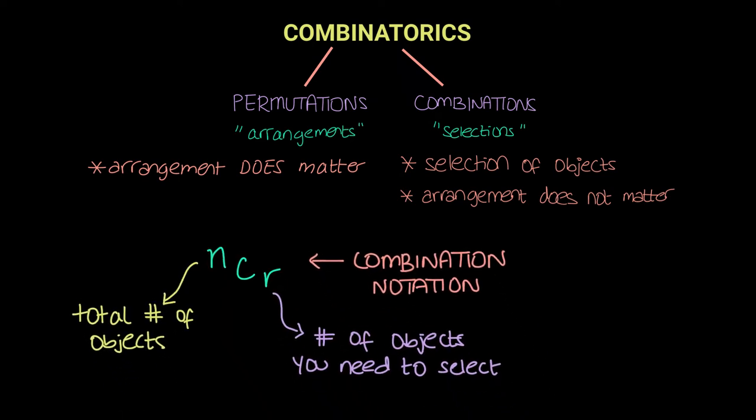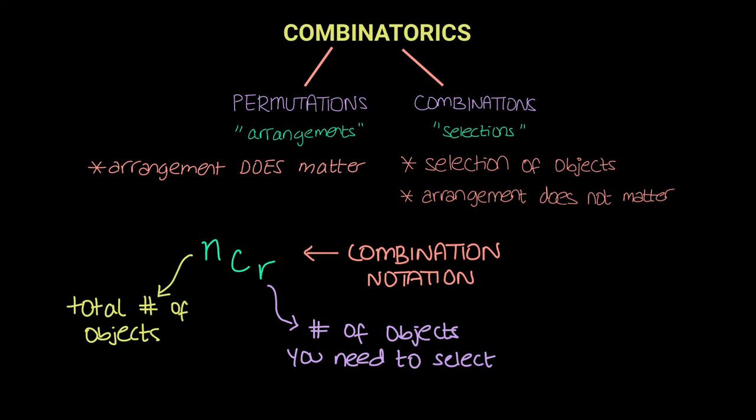Now let's introduce the combination notation. If you look in your calculators, you will have a notation that says NCR. NCR represents N being the total number of distinct objects, and R represents the number of objects you need to select. C implies the combination notation, or simply choosing R objects from N.